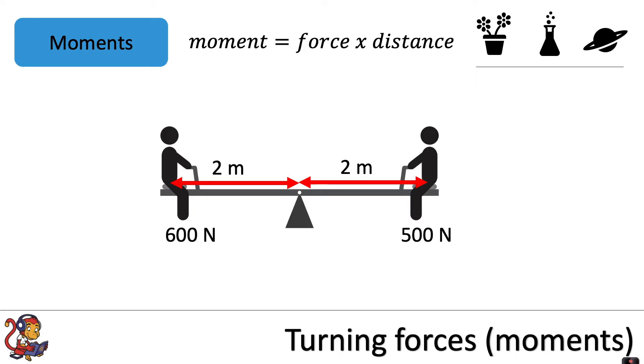Now we're going to use this moment equation to calculate the moments on either side of the pivot and work out which direction this seesaw will move in. When calculating moments, we need to calculate either side of the pivot.